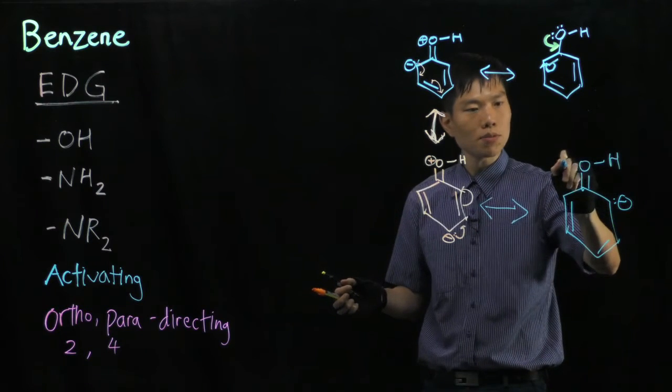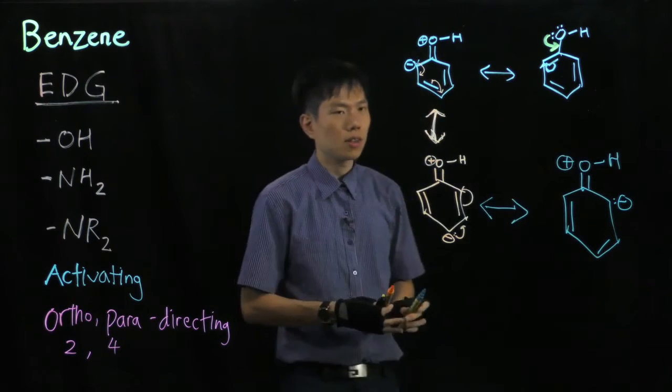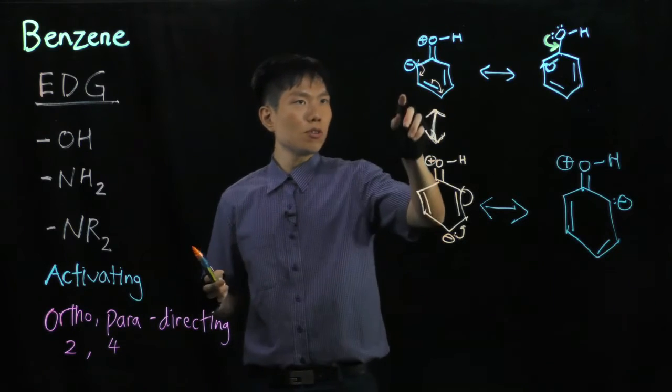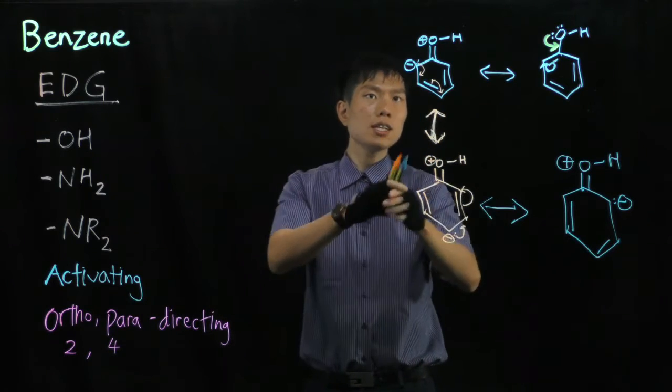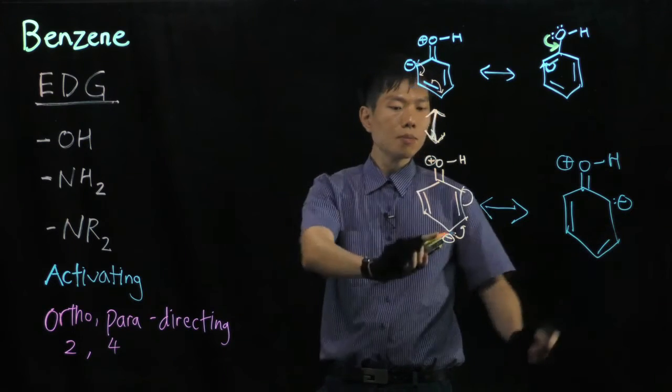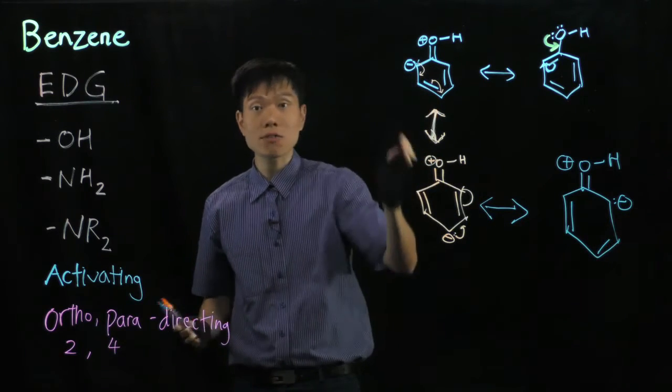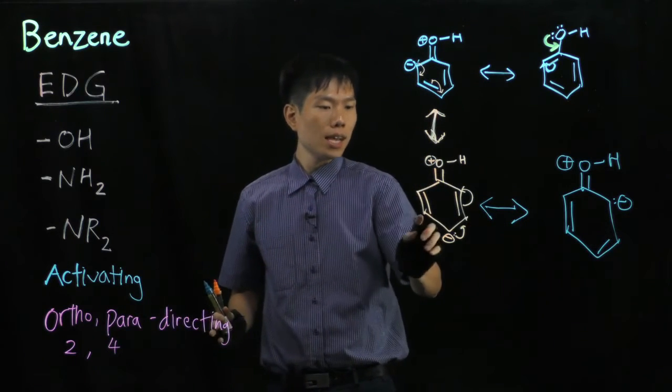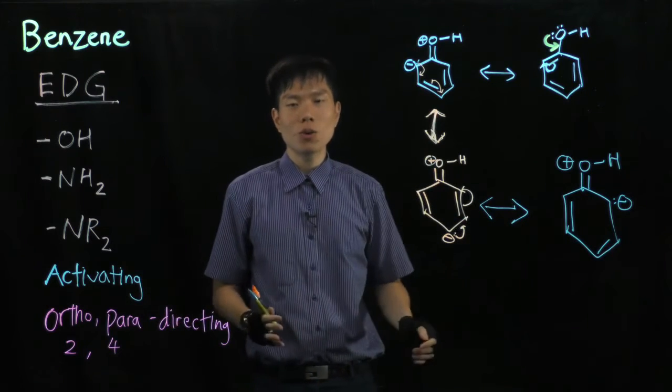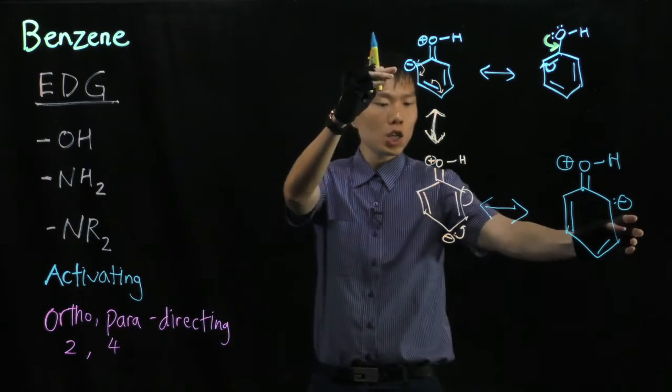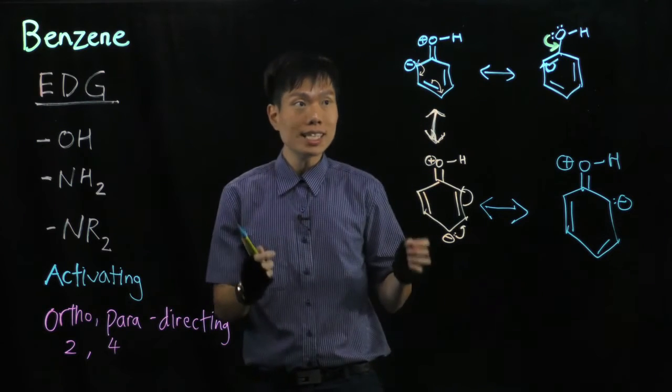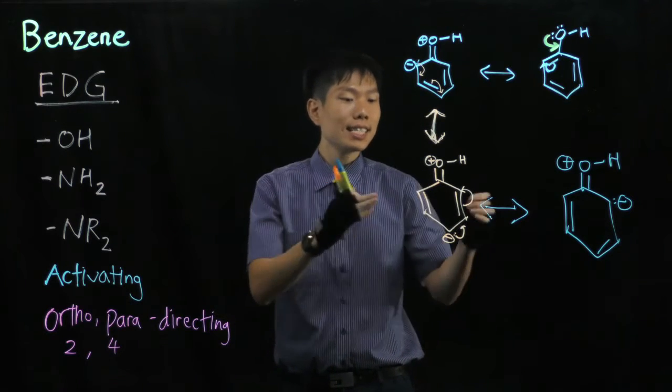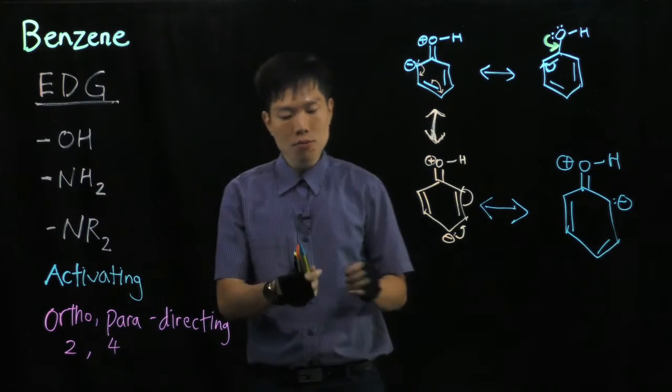And what you realize is something very interesting. At any part of time, you notice the ortho position and the para position would gain some negative charge. And the para and the meta position, they do not get any charge. What it means is,